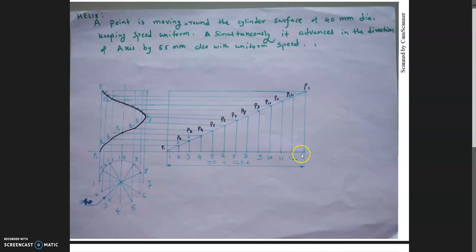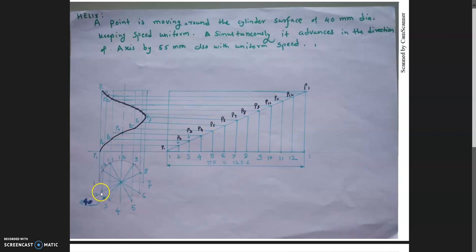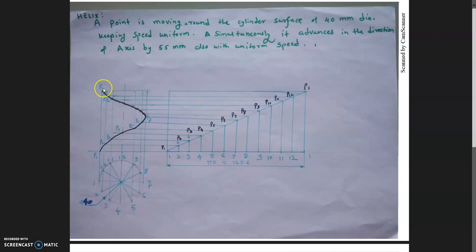Divide into 12 equal parts: 1, 2, 3, 4 up to 12. Then draw the diagonal, because the point is moving with uniform speed along the axis and around the cylinder. From this diagonal you get each and every point — 1, 2, 3, 4, 5, 6, 7. From line two you get point P2, from line three you get point P3, from line four you get point P4, and so on. This gives you the helix on the cylinder.